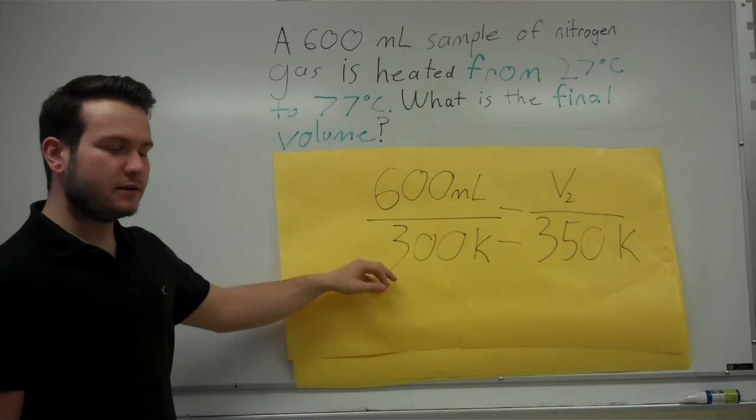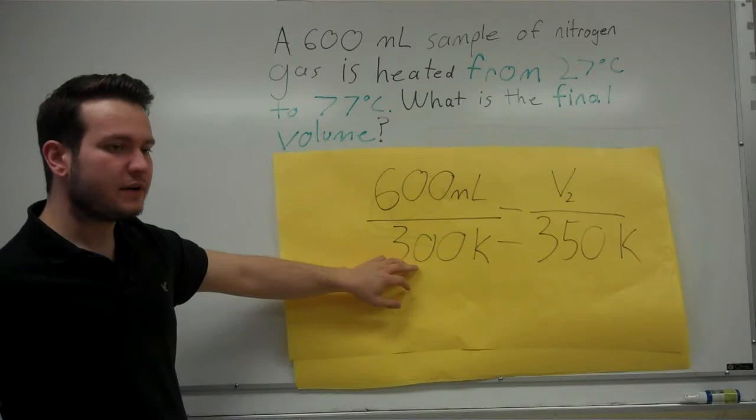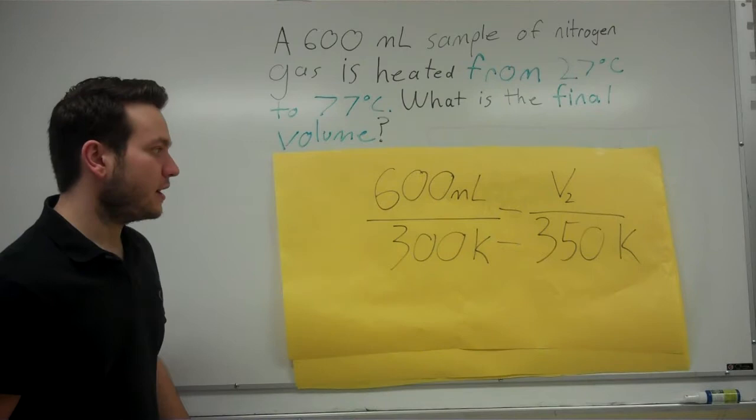Your next step is to plug in the known values into your equation. So, you put the 600 milliliter as your V1, the 300 degrees Kelvin as your T1, and the 350 degrees Kelvin as your T2.